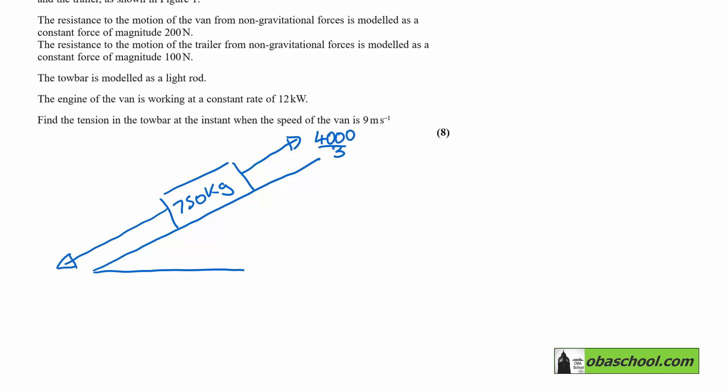Now that's the component of the weight, which is going to be 750 times 9.8 times the sine of the angle here, which we know is 1/15th. So that's the gravitational forces. And then we combine the 200 and the 100 here into 300.